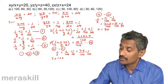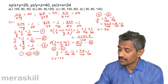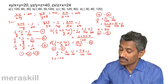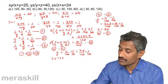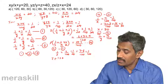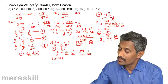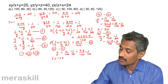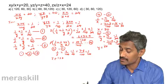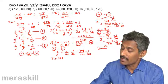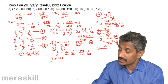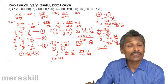So x = 30. For y, equation 4 minus equation 3 gives 1/y = 7/120 − 1/24 = 7/120 − 5/120 = 2/120 = 1/60, so y = 60. Ultimately, we have y = 60, x = 30, and z = 120, giving the answer 30, 60, 120.